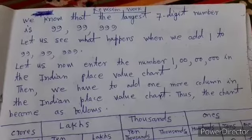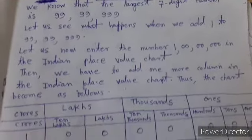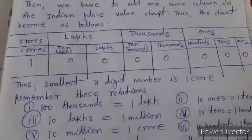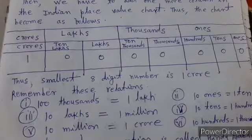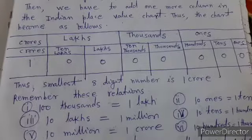Thus the chart becomes as follows. We observe here that the periods are crore, lakhs, thousands and ones.